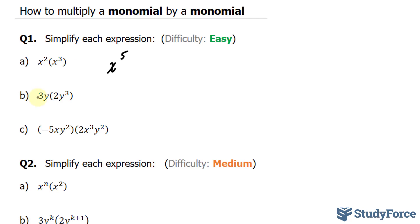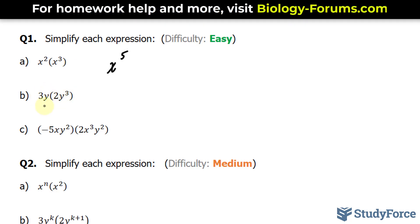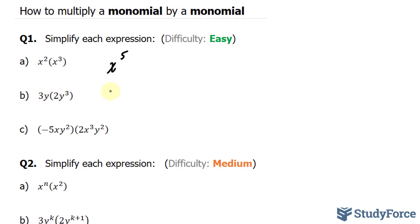In question B, we're multiplying the monomial 3y by 2y to the power of 3. Here we have numbers, so we can multiply 2 and 3 together. That's 6. And then the base is y. This has a power of 1, but it's not written. We add the exponents for the same reason. We have y to the power of 4.